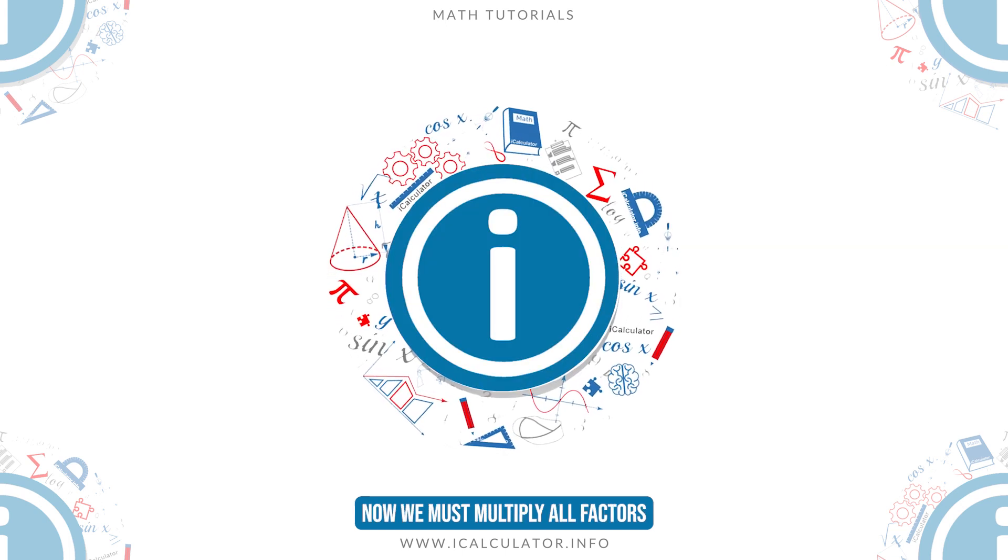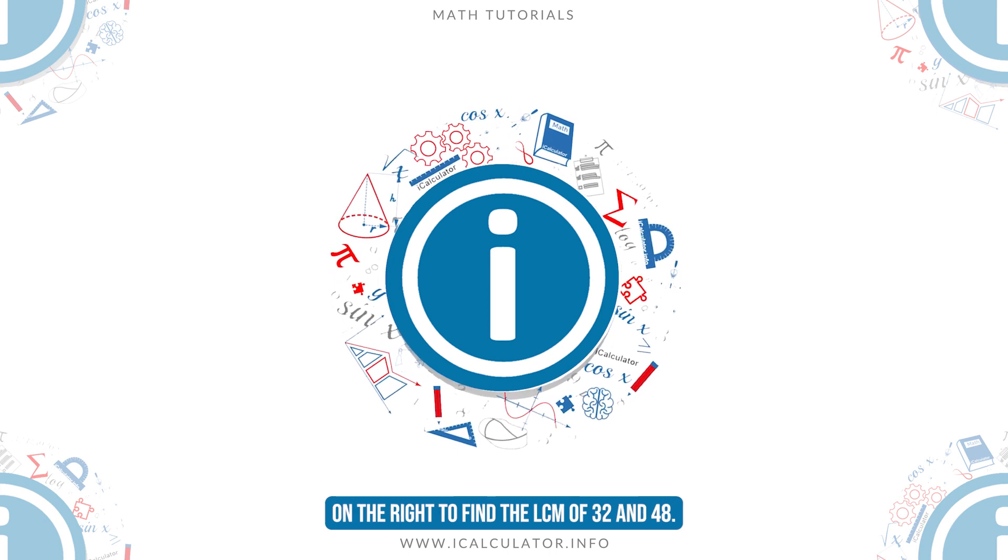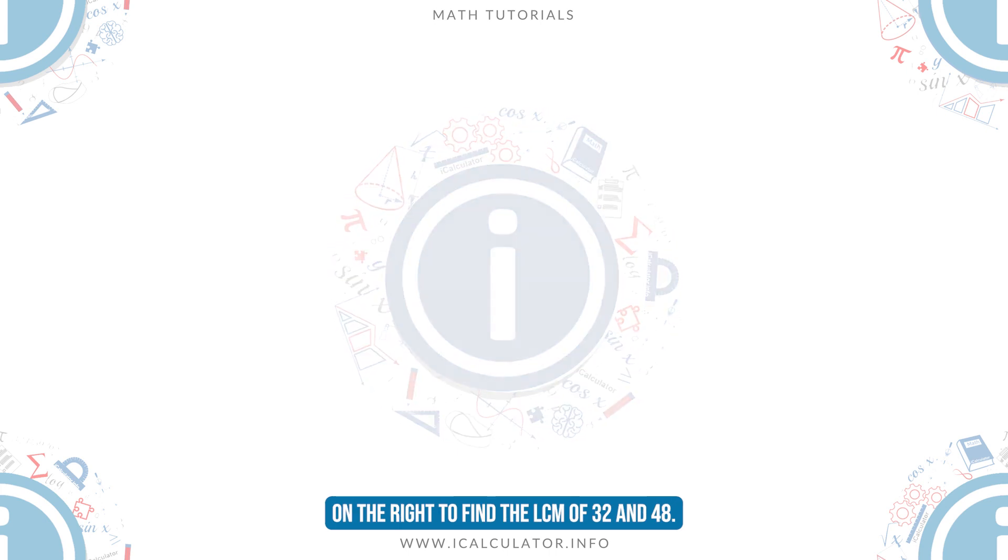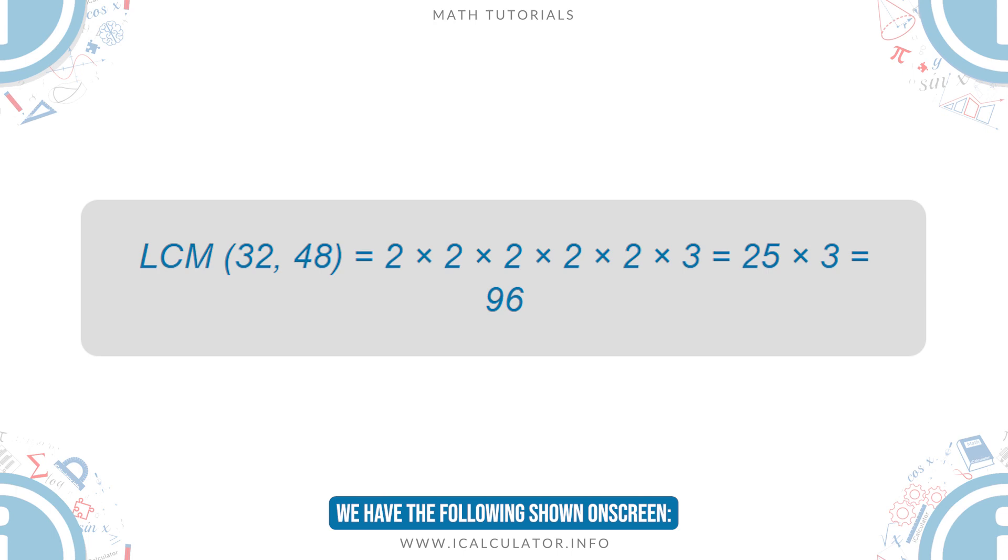Now, we must multiply all factors on the right to find the LCM of 32 and 48. We have the following shown on screen.